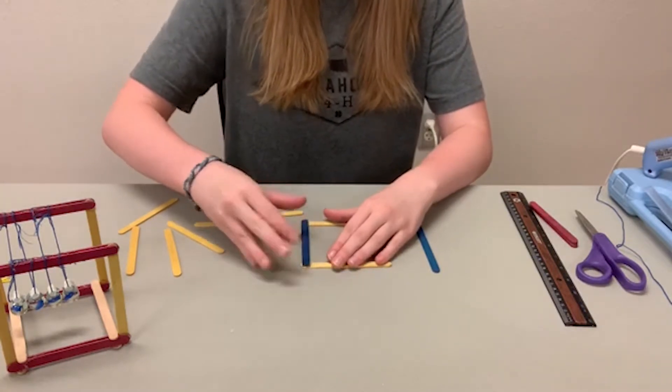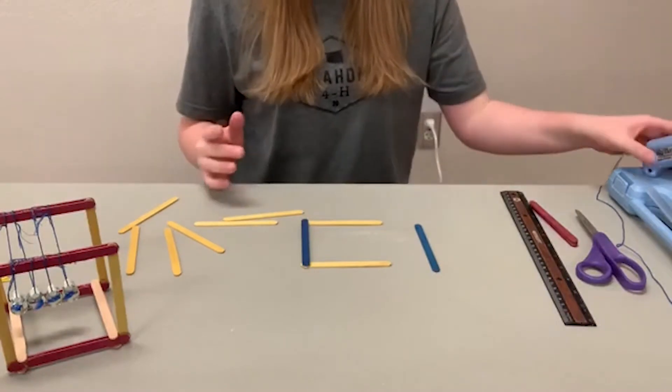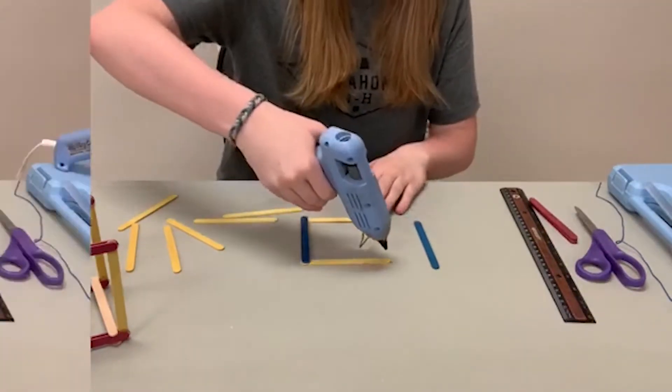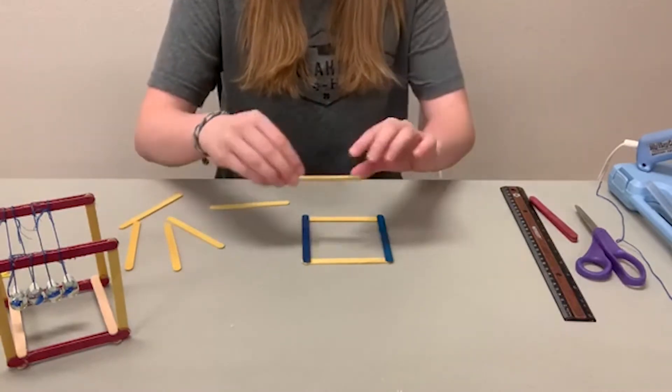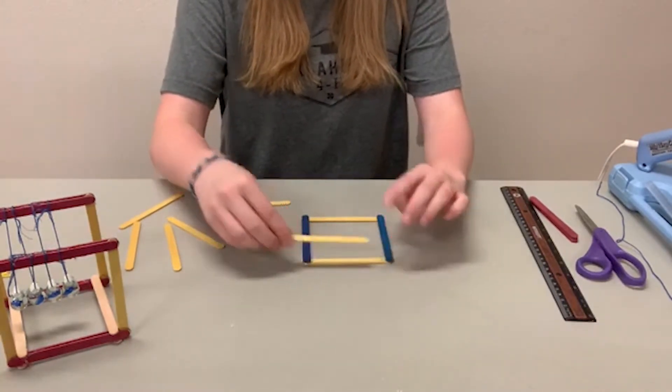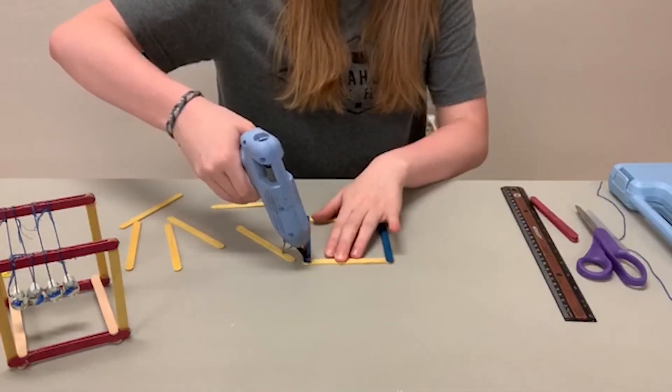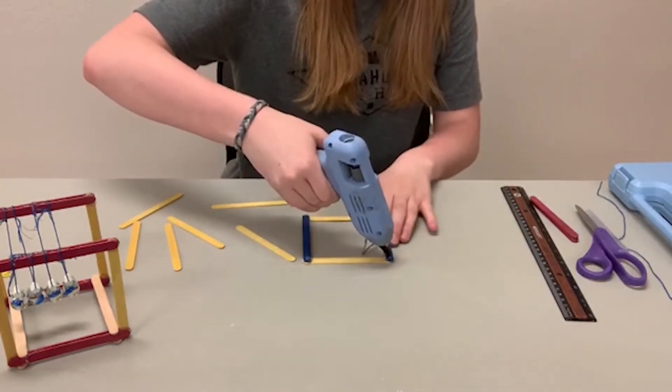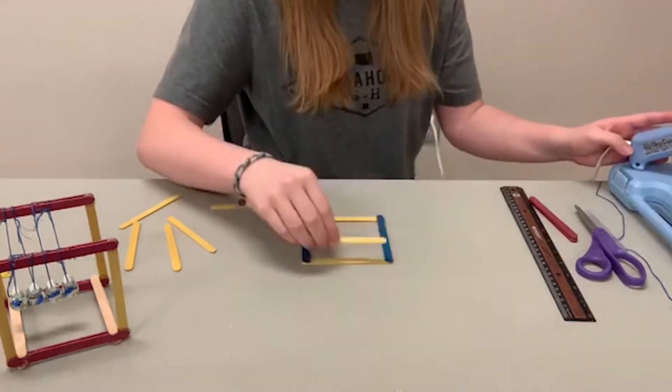Sometimes you can even use something that has a corner on it and that should be fine as well and then you're going to do the same thing on the other side. The next step is you're going to place two more popsicle sticks on top of the blue popsicle sticks. You're going to put another dab on each end and then place it down again.